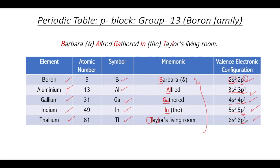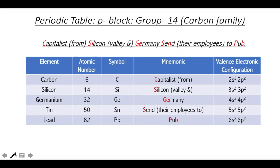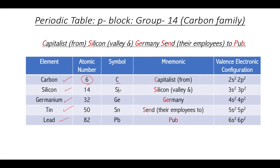Moving on to Group 14, the carbon family. This family has five elements: carbon, silicon, germanium, tin, and lead, with atomic numbers 6, 14, 32, 50, and 82. Carbon is a very important element because it forms the basis of organic chemistry as a separate branch with billions of compounds. The symbolic representation: carbon is C, silicon is Si, germanium is Ge, tin is Sn, and lead is Pb.